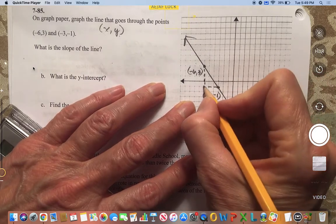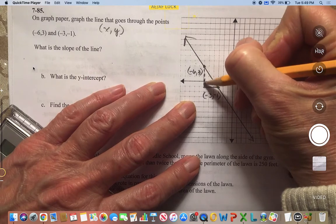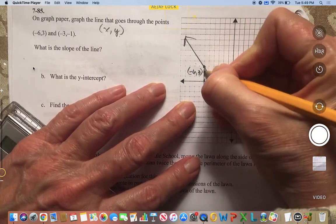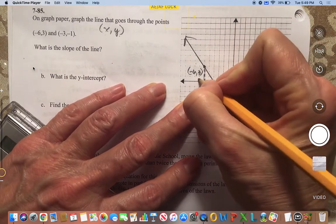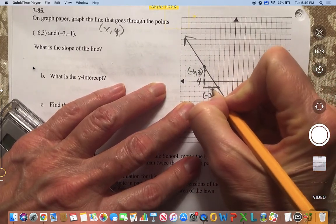Okay, so 1, 2. So it looks like the y part is 1, 2, 3, 4. So that's one part of the slope triangle. And the x part is 3.